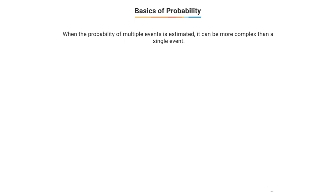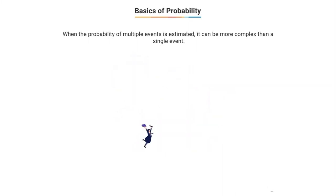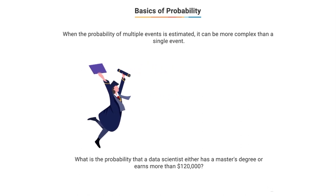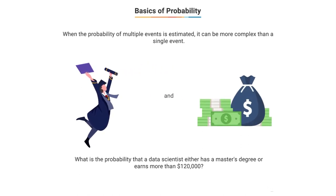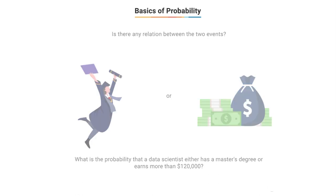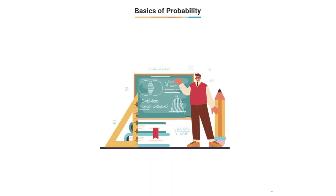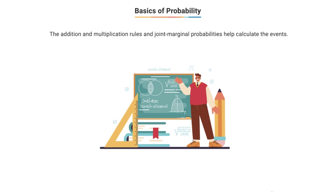For example, estimating the probability of multiple events can be more complex than just a single event. The probability that a data scientist has a master's degree is relatively easy to calculate. But consider: what is the probability that a data scientist has a master's degree and earns more than $120,000? Or what is the probability that a data scientist either has a master's degree or earns more than $120,000? Our discussion of single and multiple events and associated rules — addition and multiplication rules, and joint and marginal probabilities — will enable us to answer these questions.